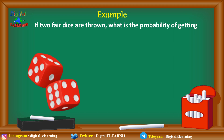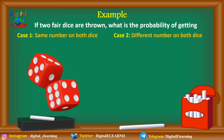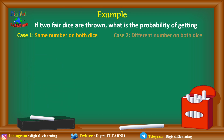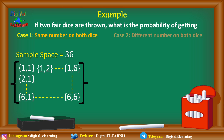Now let's take an example of dice. If two fair dice are thrown, what is the probability of getting, first case, the same number on both dice, and second case, different numbers on both dice? For the first case, our sample space consists of 36 outcomes — for example, one-and-one through one-and-six, two-and-one through six-and-six, giving a total of 36 possible combinations.